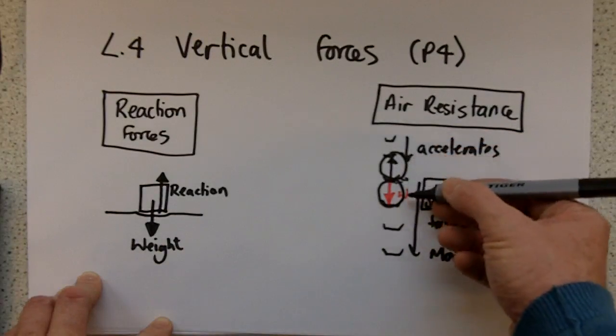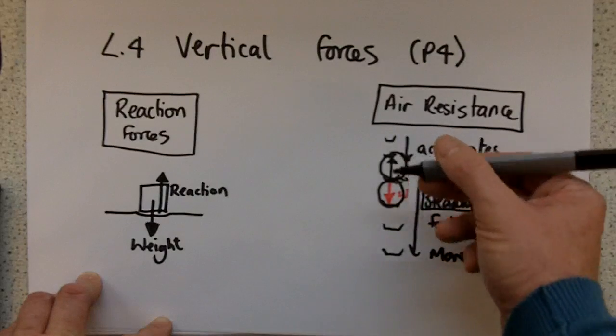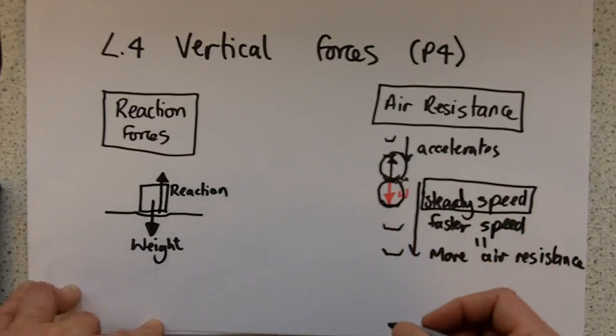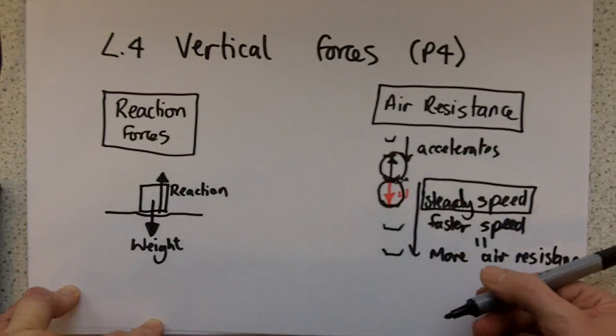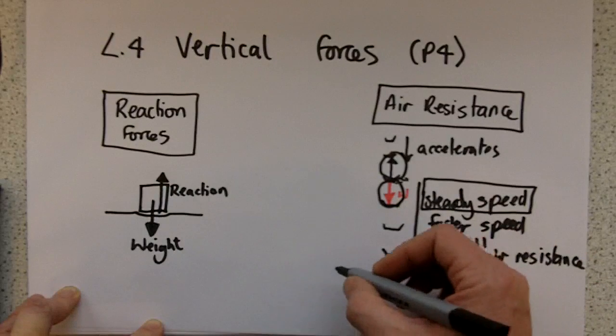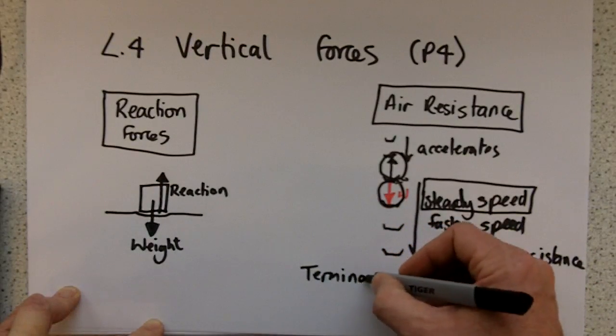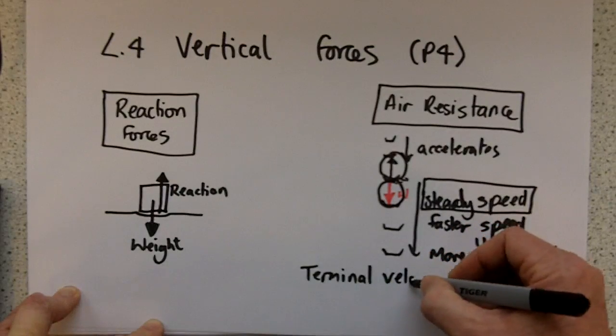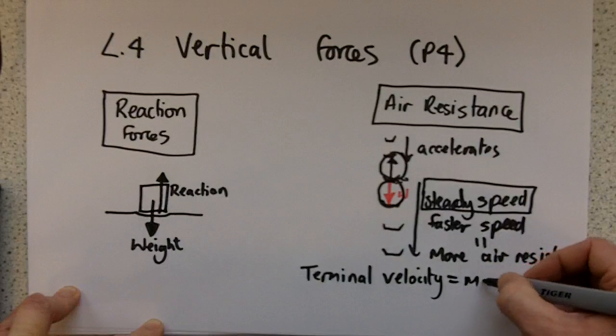Eventually the air resistance force matches the weight force, and when those two forces are balanced, then the speed does not change. So whatever speed it got to before those were balanced, then its speed will stay the same. Now that's known as the terminal velocity. So the terminal velocity of an object when it's falling is its maximum speed.